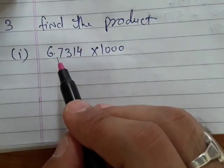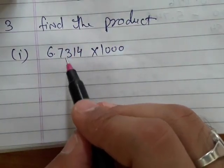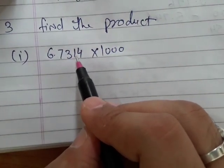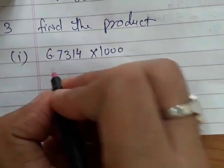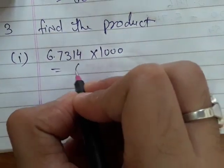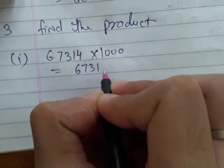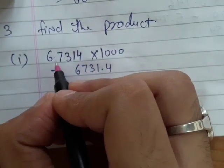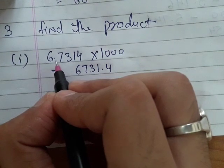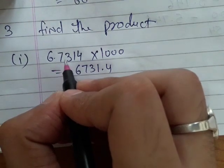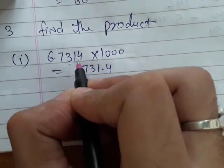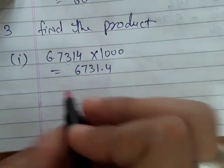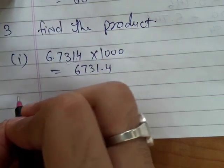So here, this decimal point will be shifted 3 digits to the right side. So you can directly write 6731.4. Now you can see that we have shifted this decimal point 3 digits to the right side — that means after 1 we will apply this decimal point.